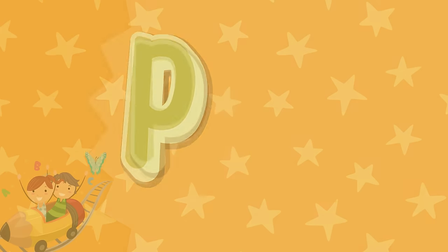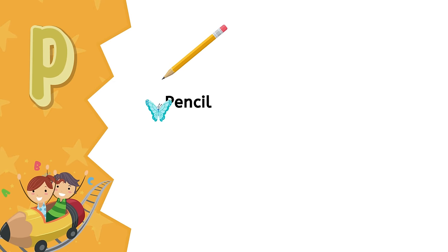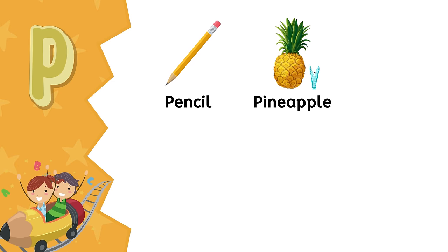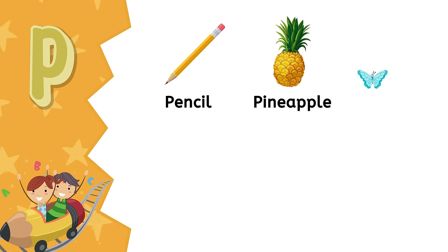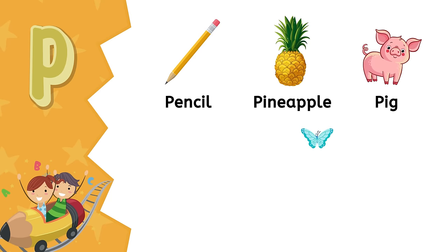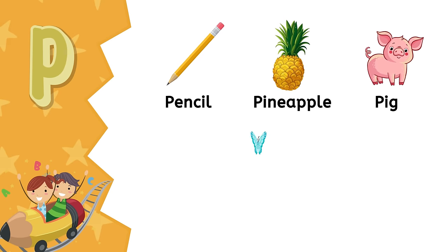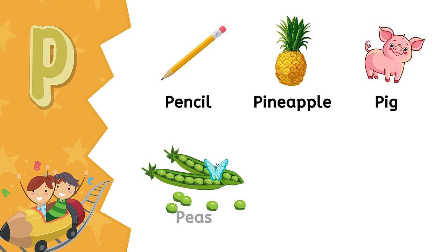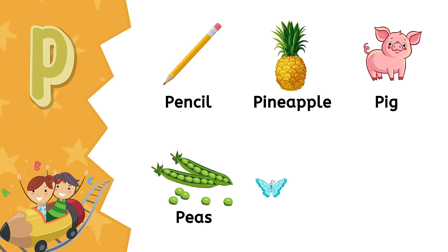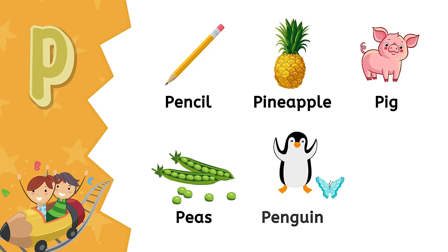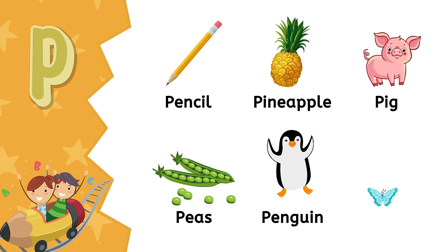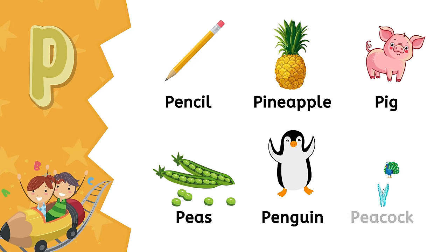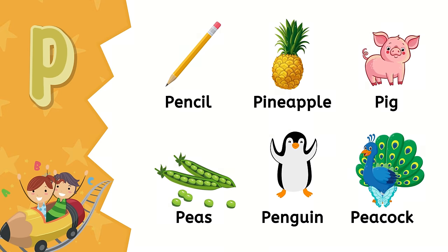P. P is for pencil. P is for pineapple. P is for pig. P is for peas. P is for penguin. P is for peacock.